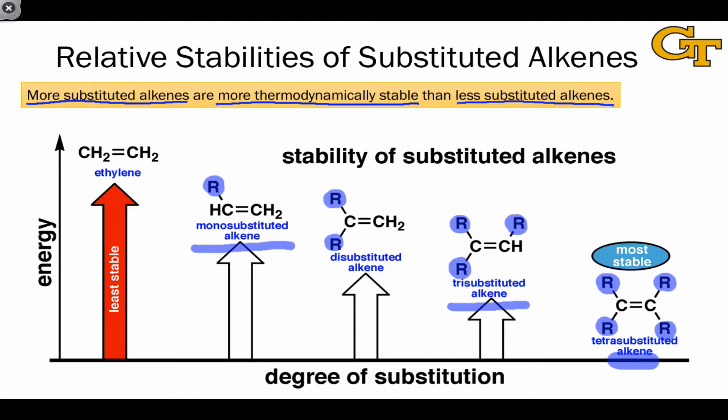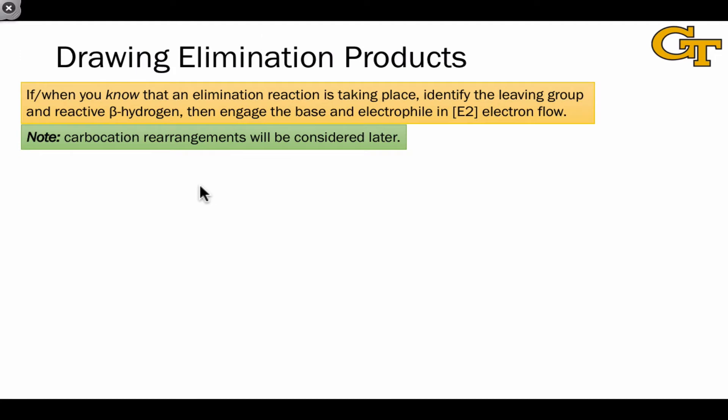We're going to apply this principle in drawing elimination products, and it comes up quite often because most alkyl halides have distinct sets of beta hydrogens that would lead to different alkenes upon elimination. Let's take a step back first though and talk about drawing elimination products in general. The process is analogous to drawing nucleophilic substitution products. For now we'll leave aside the question of whether substitution or elimination occurs and assume that we know an elimination reaction is occurring.